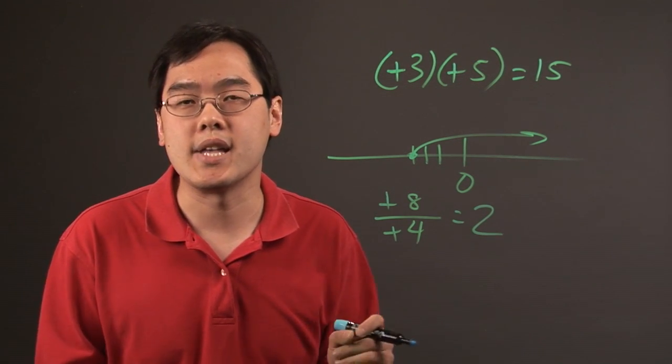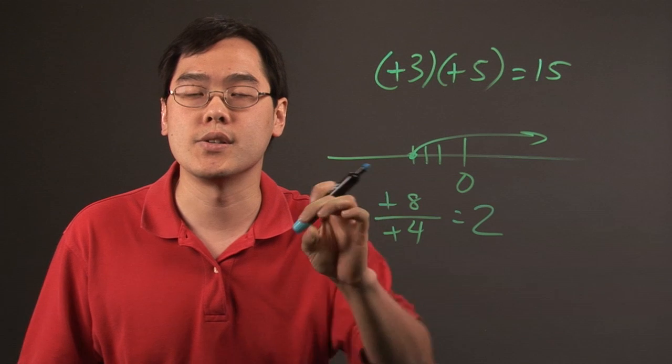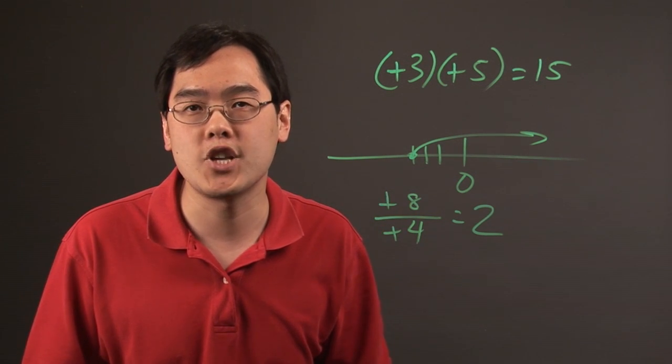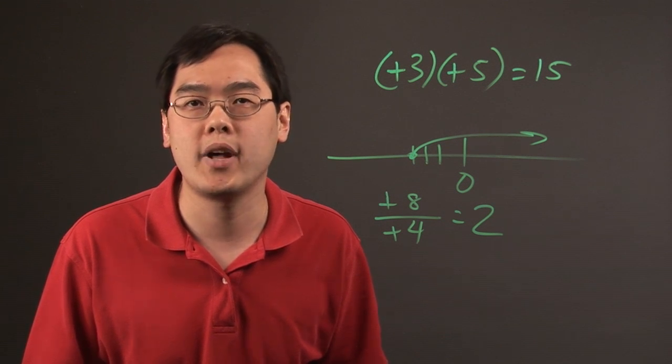So basically what ends up happening is that the second negative will cancel the first negative because it forces you to switch back in terms of direction. So I'm Jimmy Chang and that answers the question, why are two negative numbers always positive when multiplied or divided?